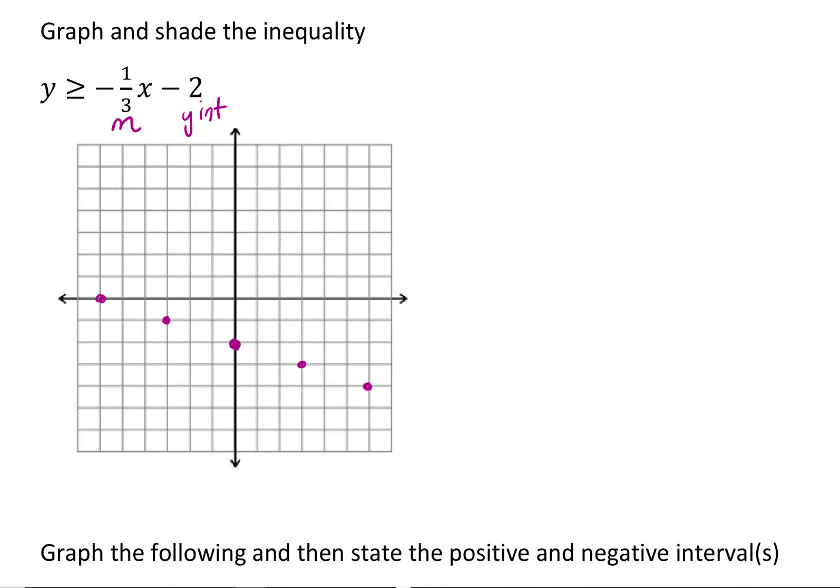Now I have to determine if it's solid or dashed. Because we are given that equal sign as well as the inequality, it's going to be a solid line. So I'm going to fill in that solid line. So here's my graph. I graph first and I determine that it was solid.